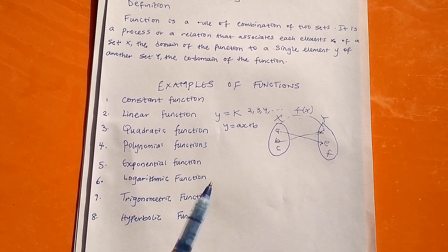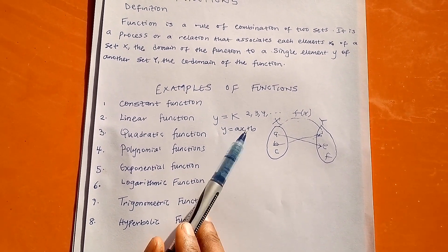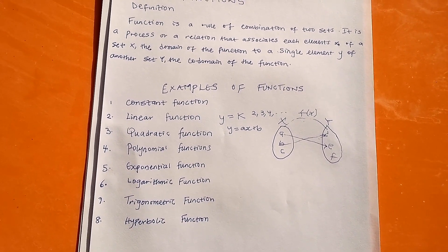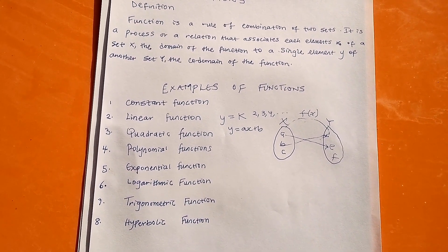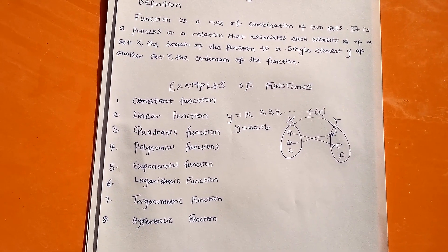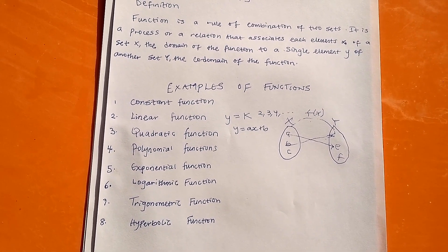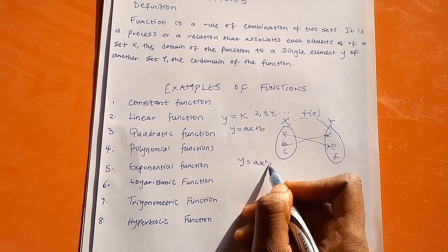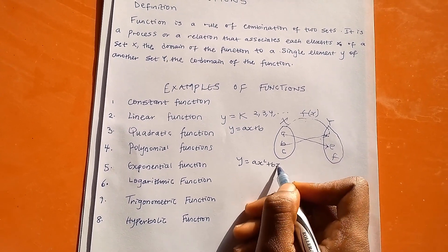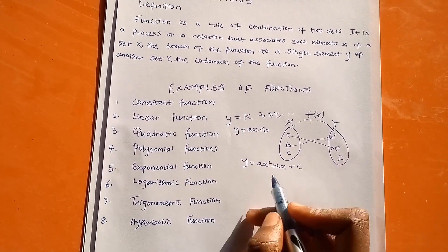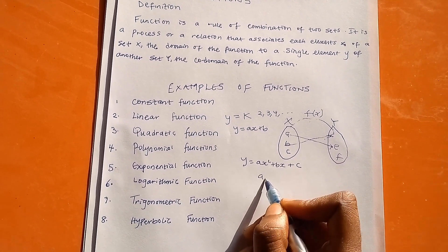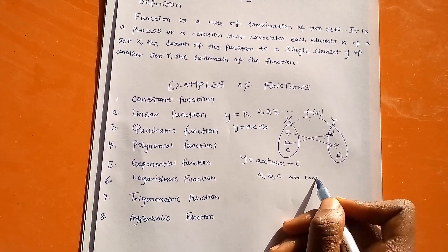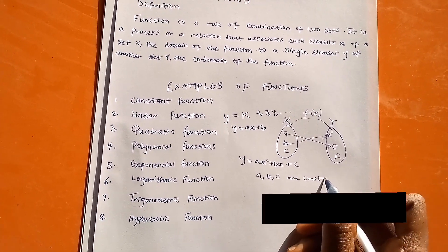Number three is the quadratic function, just like our quadratic equation. A quadratic function is usually represented by y equals ax squared plus bx plus c, where a, b, and c are constants with given values.